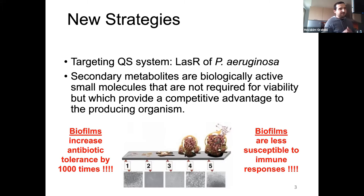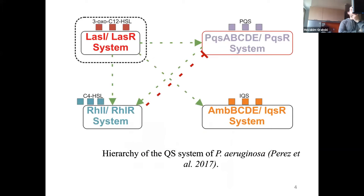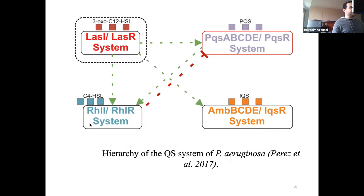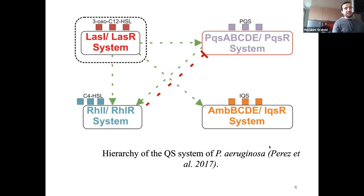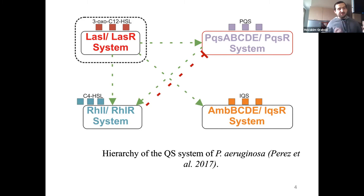This is quite a huge problem. The idea is to use secondary metabolites — small molecules — to specifically target the quorum sensing system of Pseudomonas aeruginosa. The quorum sensing system consists of three different systems. The LasI/LasR system controls the others, so if we inhibit the LasR system, we can stop the signaling cascade which activates the whole quorum sensing system, leading to a decrease in biofilm synthesis.